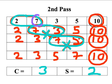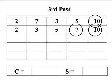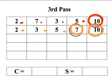Just like before, 7 was the biggest number in the remaining list and has bubbled to the top, next to the 10. So at the end of the second pass, the order is 2, 3, 5, 7, and 10 — with 7 and 10 now fixed.